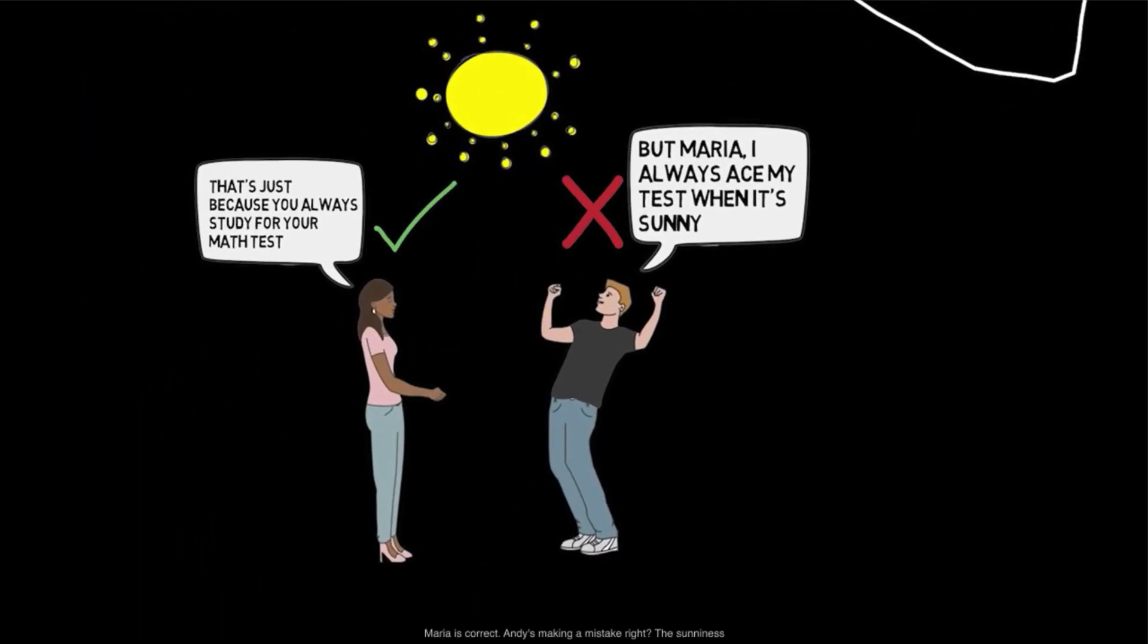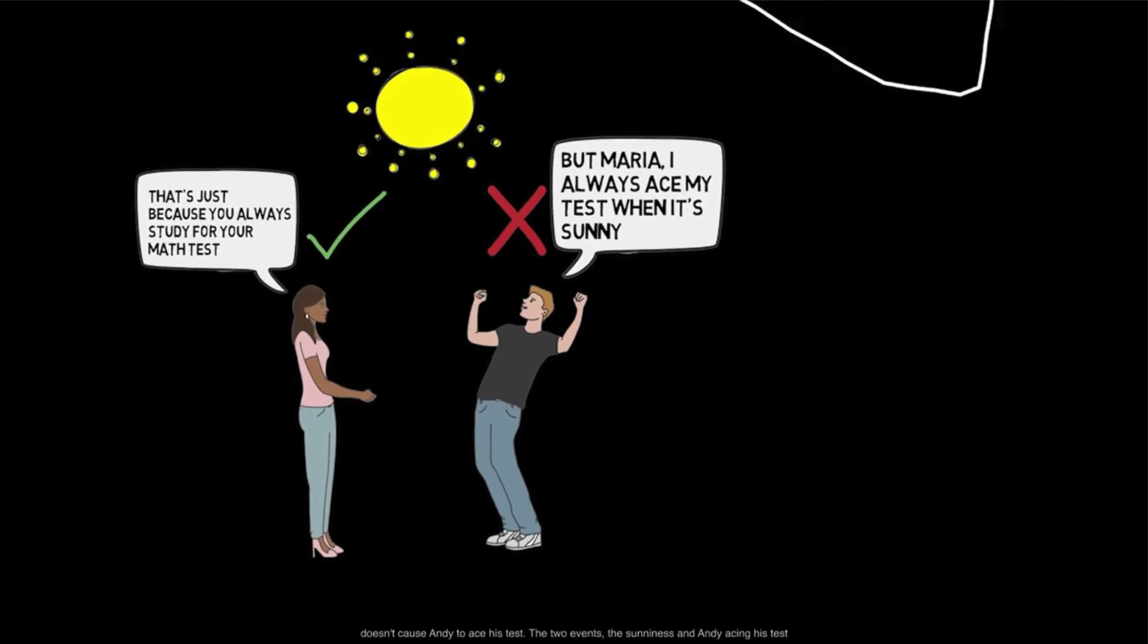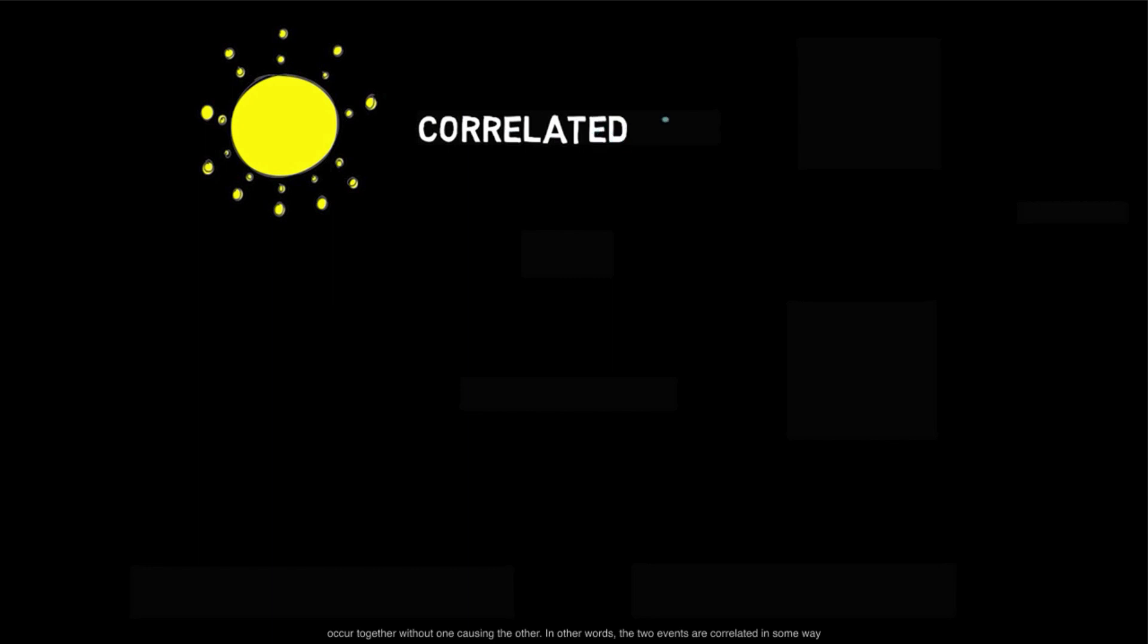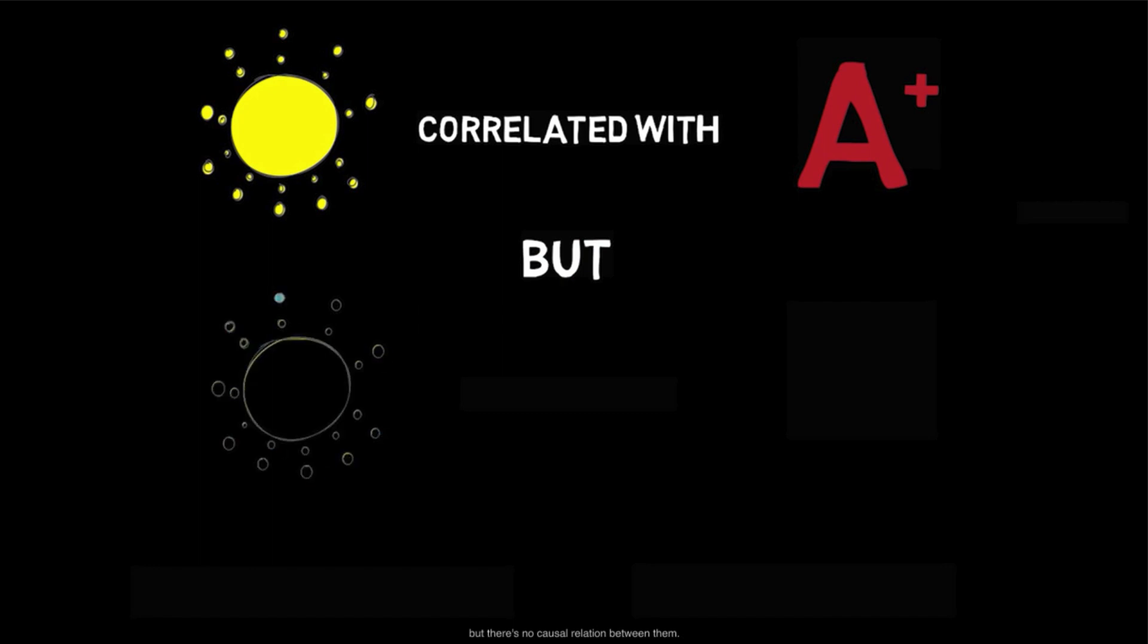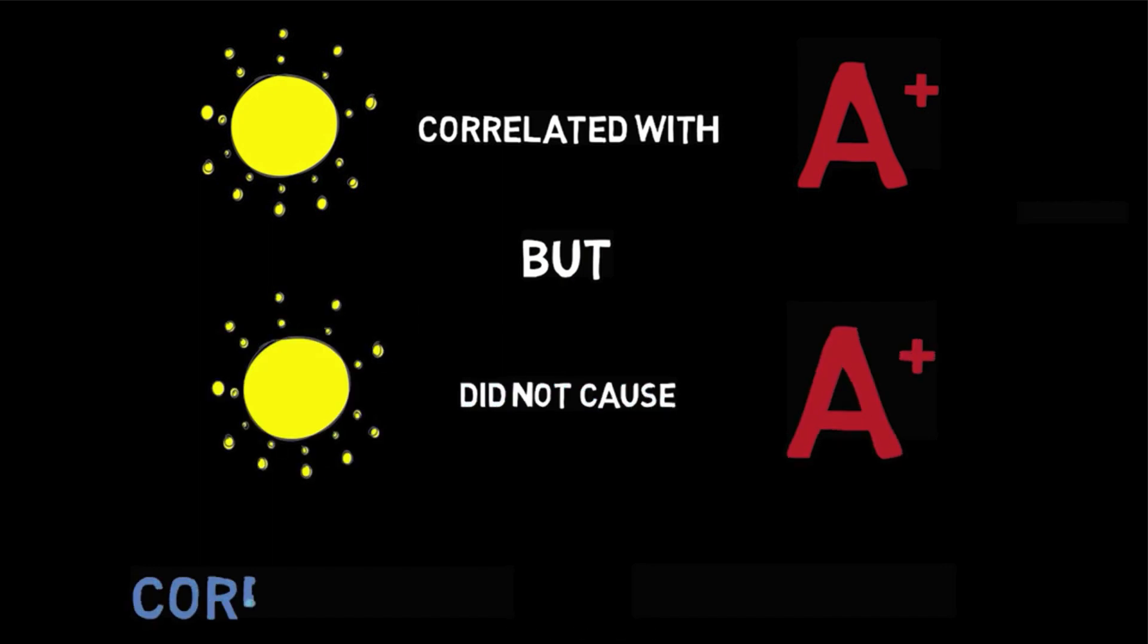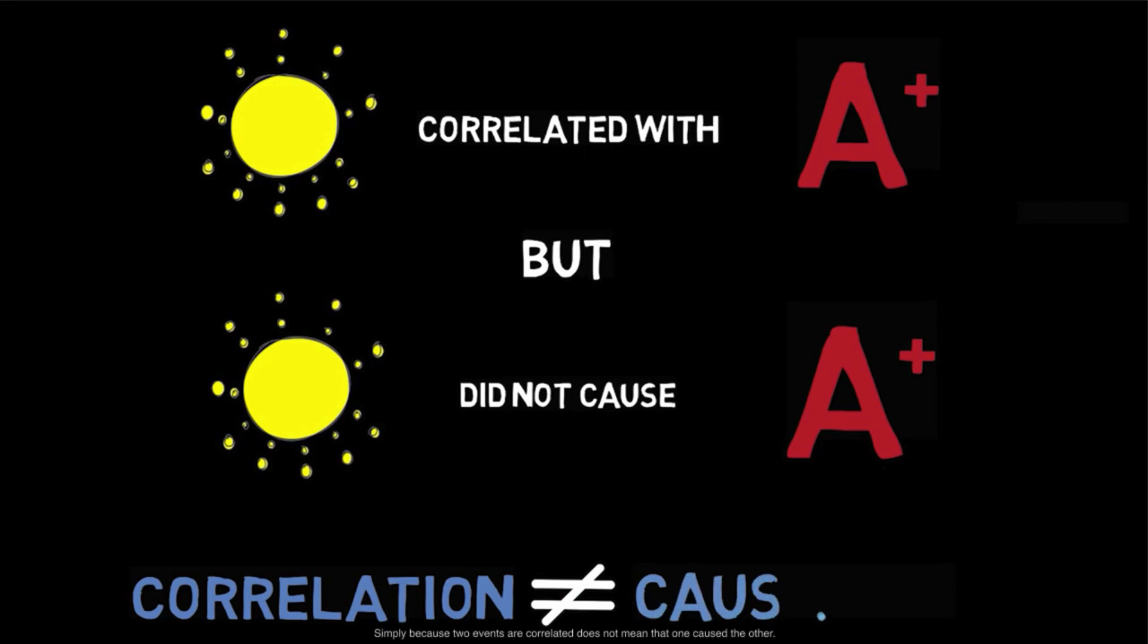Maria's correct. Andy's making a mistake, right? The sunniness doesn't cause Andy to ace this test. The two events, the sunniness and Andy acing the test, occur together without one causing the other. In other words, the two events are correlated in some way, but there's no causal relation between them. Andy's reasoning here is fallacious. Simply because two events are correlated does not mean that one caused the other. This conflation of correlation and causation is what we will talk about in this video.